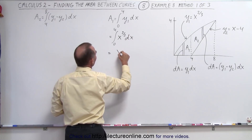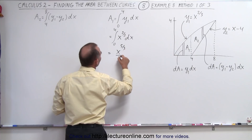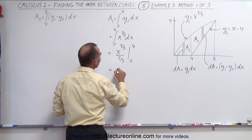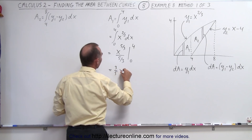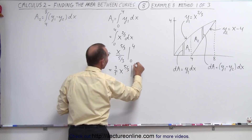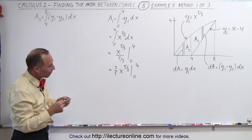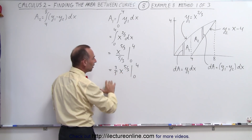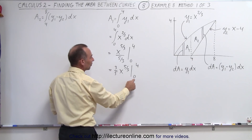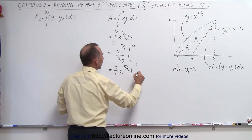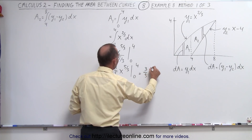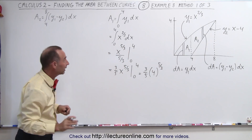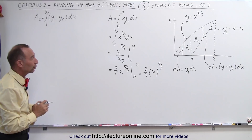When we integrate that, we get x to the five-thirds divided by five-thirds, evaluated from 0 to 4 — or equivalently, three-fifths times x to the five-thirds evaluated from 0 to 4. When we plug in the upper limit, the cube root of 4 is not easily simplified, so we'll leave it as is. The lower limit gives 0, so A1 equals three-fifths times 4 to the five-thirds. We'll hold off on evaluating that, hoping it cancels later.